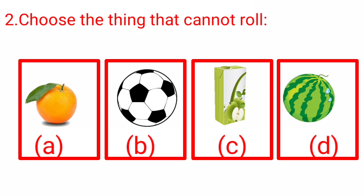So, option C, juice pack is the object that cannot roll. And we will put a tick mark at option C.